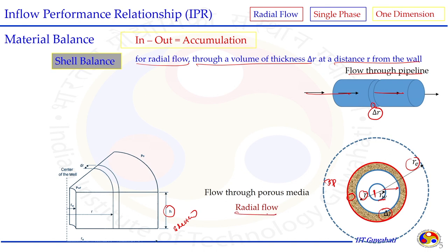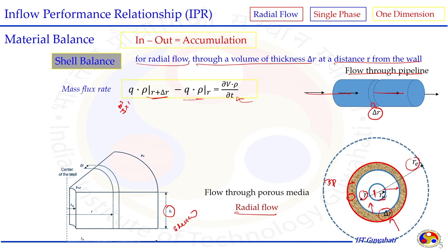For the radial flow system, we can do a similar balance where R_w is one boundary of the production well. We consider a slab of del_r thickness at distance r from the center, with pay zone thickness h spread over the entire domain. Looking from the top view, we take this slab of del_r at distance r, where the reservoir radius is R_e. Within this shell of del_r thickness we perform the material balance via shell balance.